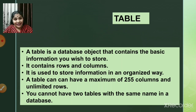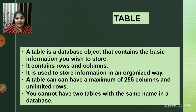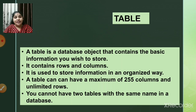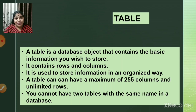A table contains rows and columns. Rows represent records, and columns represent fields. For example, in a student information table, the different fields — such as name, division, class, activity, phone number, and address — are the columns. A row is nothing but the record of a particular child. Tables are used to store information in an organized way.